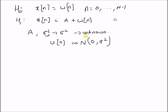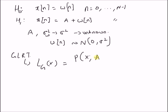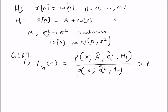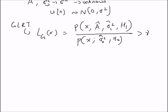So how do we construct the likelihood ratio test? The generalized likelihood ratio test is defined as L_G(x) equal to the ratio of the probability distribution of the observation vector x, given the maximum likelihood estimates of the unknown parameters A-hat and sigma-one-squared-hat under H1, divided by the distribution using the variance estimate under the null hypothesis. We compare this ratio with a threshold gamma.